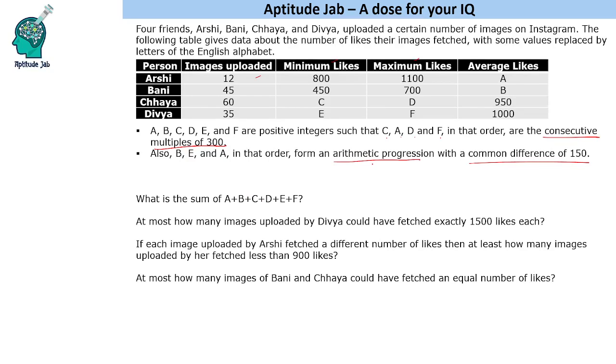How do we find this thing using common sense? We have 800 and 1100 as minimum and maximum, and average likes is A. Since C, A, D, F are multiples of 300, the average cannot be less than 800 or more than 1100. So A will be 900. Now C and D are also multiples of 300.